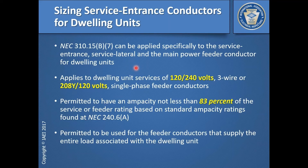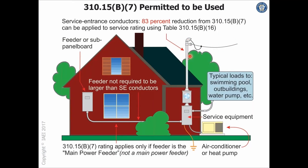You can also apply that 83% load calculation to a feeder if that feeder provides power to the entire dwelling unit. So how could you have more than one feeder where it still provides power to the entire dwelling unit before you could use the derating factors of 310.15(B)(7)? You'd be able to size the service entrance conductors using 310.15(B)(7) and its 83% load calculation.